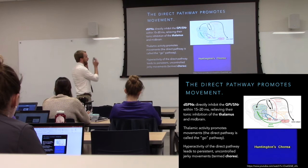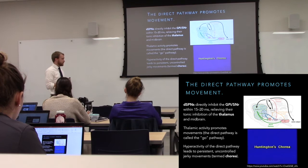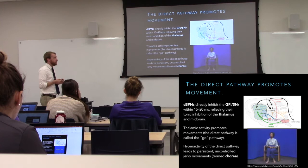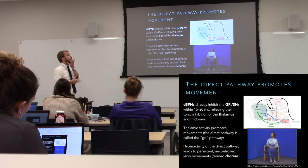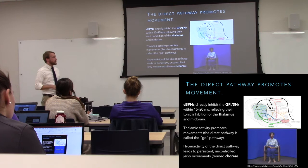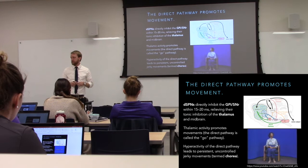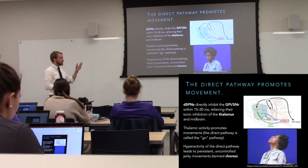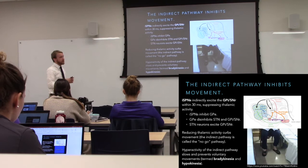We also call this the go pathway because the direct pathway allows us to move. When you have hyperactivity here, you see chorea — just another example of involuntary movements. In this case, rather than affecting just a single limb, we're more affecting the head — we get these slightly less ballistic movements, a little more writhing. This is another type of motor deficit you'll see with basal ganglia damage. These are involuntary actions that aren't getting filtered out. So here we have too much go — we're not selecting the appropriate actions, and now we have these dyskinesias.